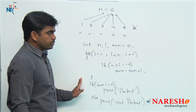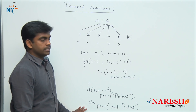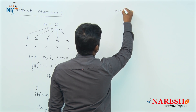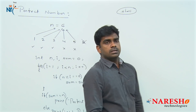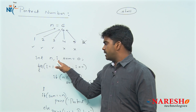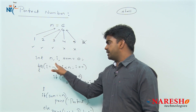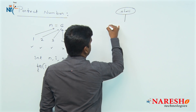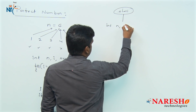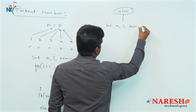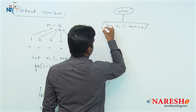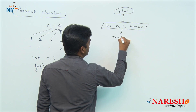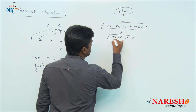Now let's convert this logic into a flowchart. The flow starts with Start. First we declare the variables: integer N, I, and sum initialized to 0. Then we read the N value.